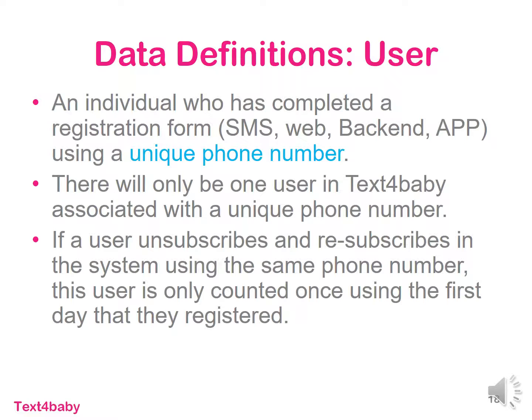The first data definition I'll explain is for user. A user is anyone who has completed registration using a unique phone number. However, the actual phone number isn't displayed in the portal. Instead, we have assigned randomized numbers to each of the participants, and those are listed as participant identifiers. One thing to note is if the same phone number registers twice — for example, if someone signs up, cancels, and then signs up again — we still treat that as one participant. So static information such as the date of registration will remain the same for that participant identifier.